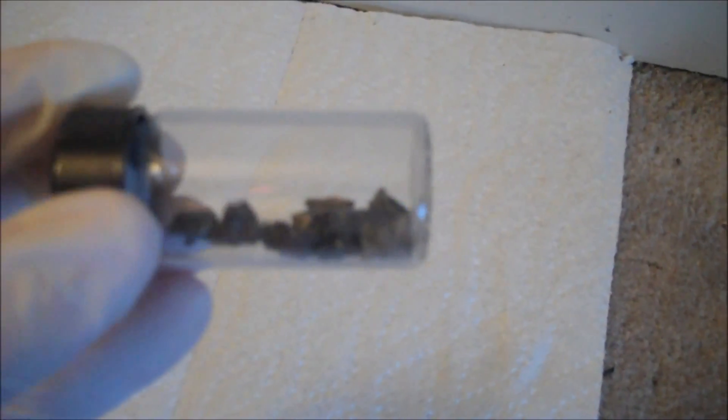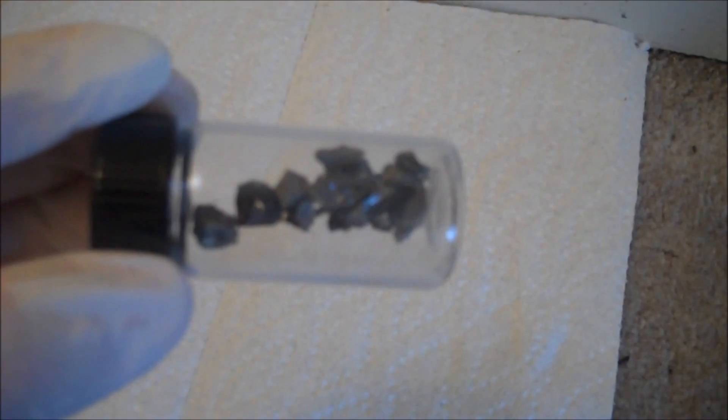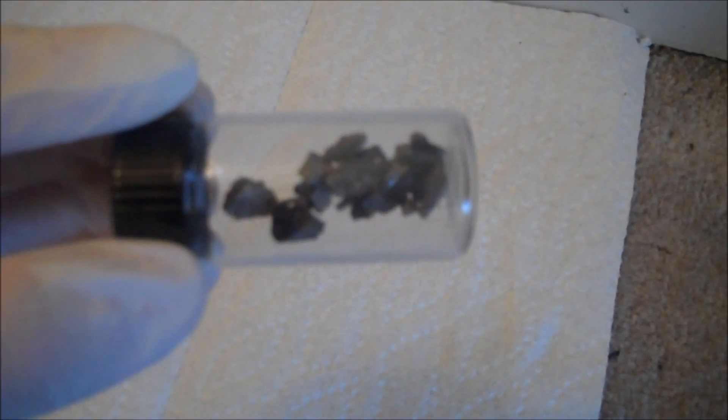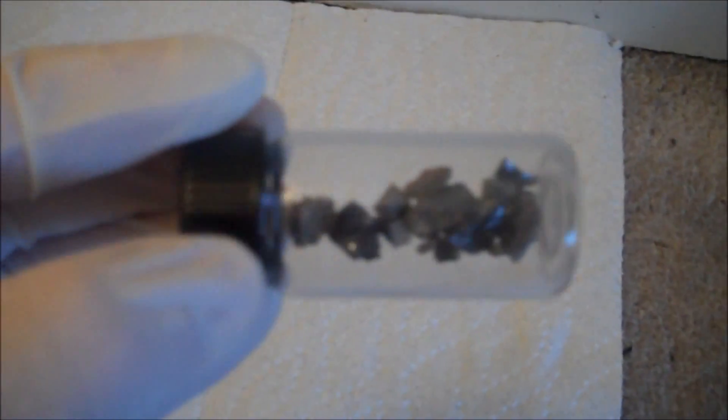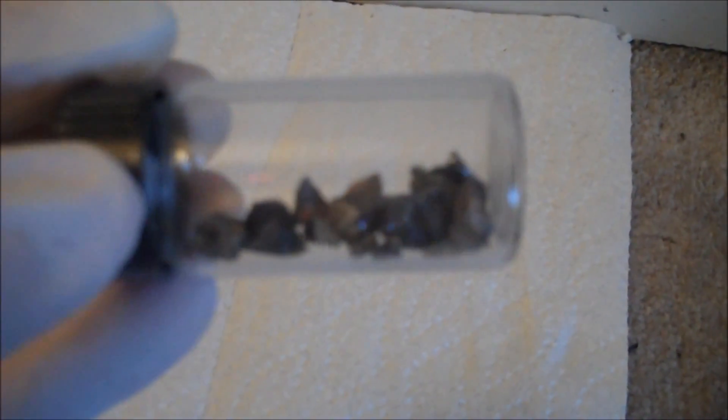Uranium is chemical element 92. This is because it contains 92 protons. It also contains well over 100 neutrons. 146 neutrons is a very common number. Whenever the number of neutrons is changed, an isotope is created.